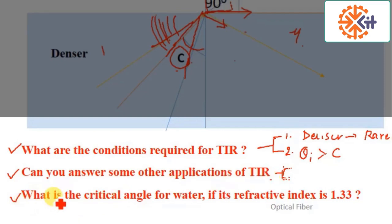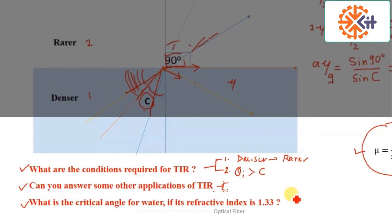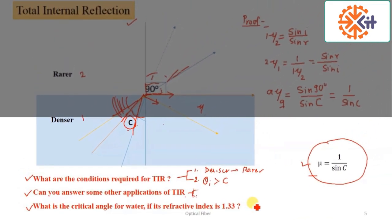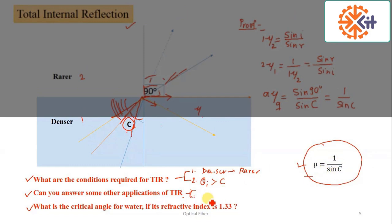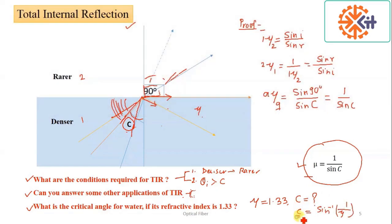The third question: what is the critical angle for water if its refractive index is 1.33? Using the formula mu equals 1 over sin c, we can write C equals sin inverse of 1 over mu. With mu equal to 1.33, you get the critical angle nearly equal to 53 degrees for water. I hope you understood this basic principle of total internal reflection. Thank you.